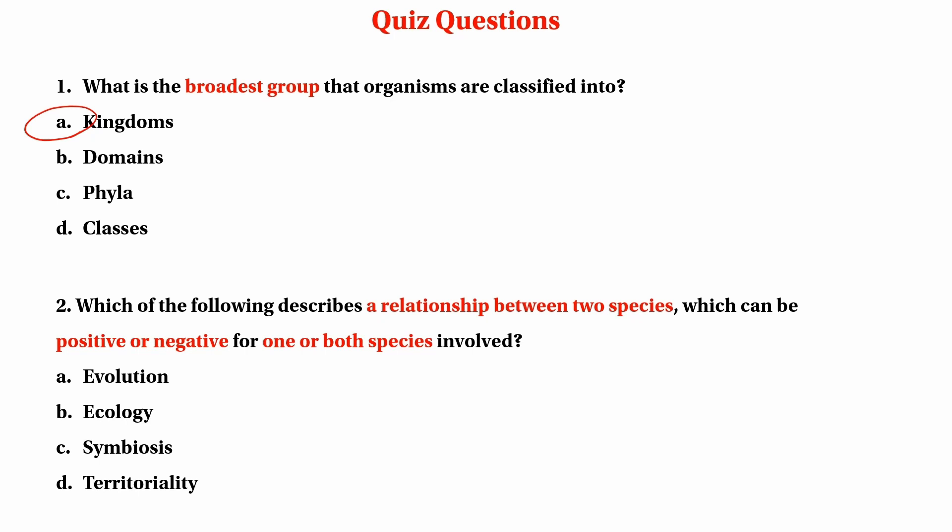The most important topics include evolution, ecology, symbiosis, and territoriality. The relationship between two species where both are negative is one type. Symbiosis is a close relationship between two different species.